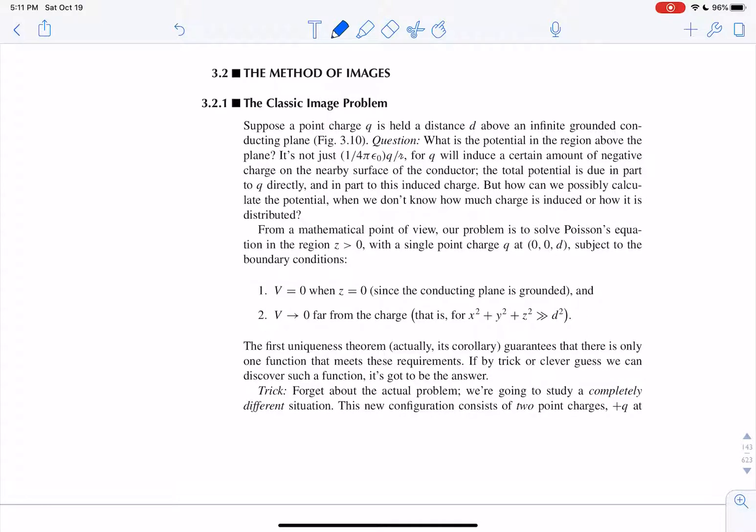The question is, what is the potential in the region above the plane? So you've got your plane that goes off forever in all directions. You've got your charge hovering above it. But what's the potential in the region between the charge and the plane? How do you solve that?